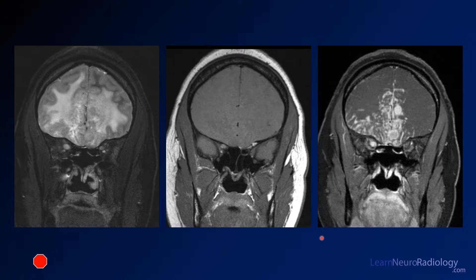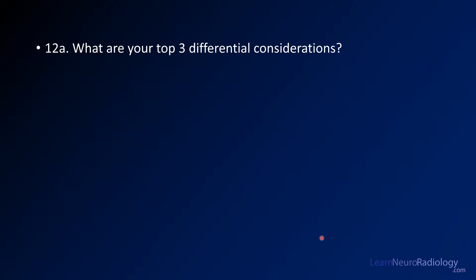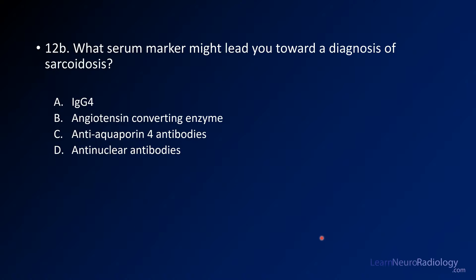These are the final images. So your question is: what is your top three considerations in your differential? And your second question is: what serum marker might lead you towards a diagnosis of sarcoidosis?